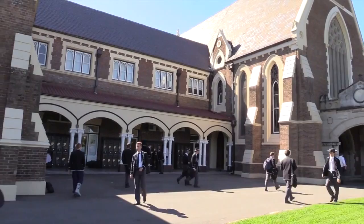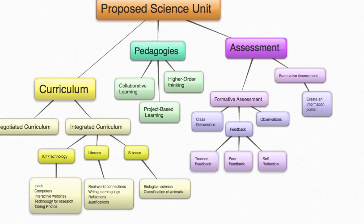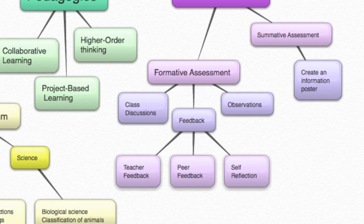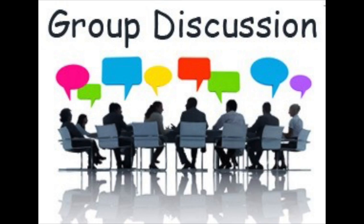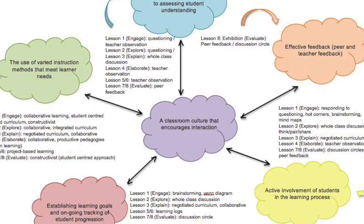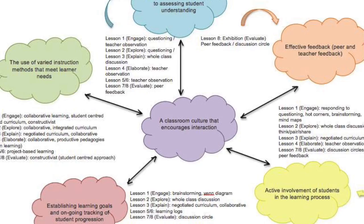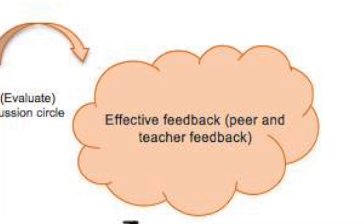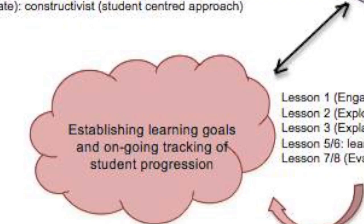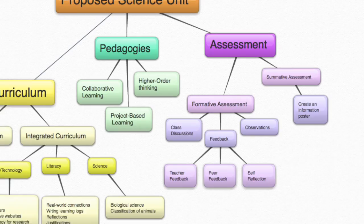Assessment plays a central role in Brisbane Grammar's academic processes. Within this unit there is a focus on formative assessment that includes questioning, whole class and group discussions, teacher observations and effective peer feedback. These four formative assessment strategies include six key principles: a classroom culture that encourages interactions through the use of varied approaches to assessing student understanding, effective feedback, active involvement of students in the learning process, establishing learning goals, and finally the use of varied instruction methods that meet learner needs. Students are also given the opportunity to negotiate the summative assessment piece by either creating a poster digitally or physically.